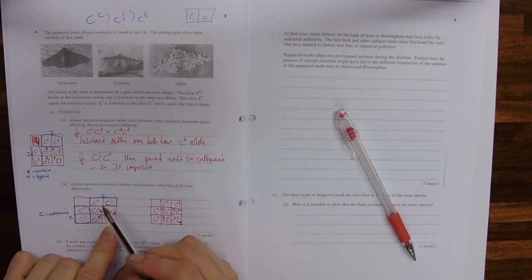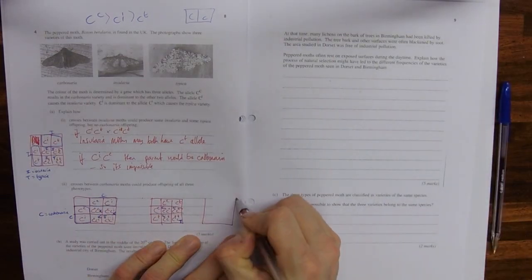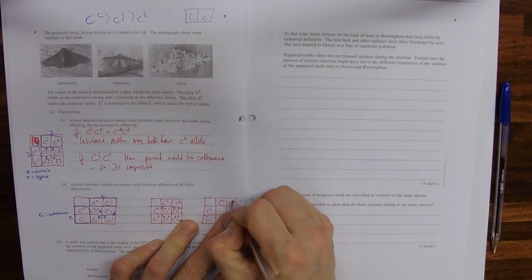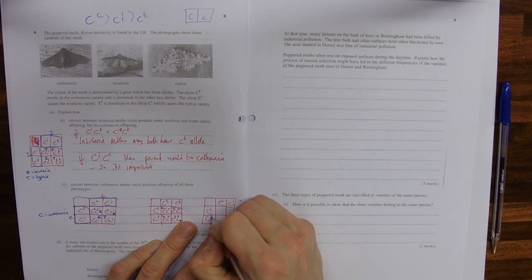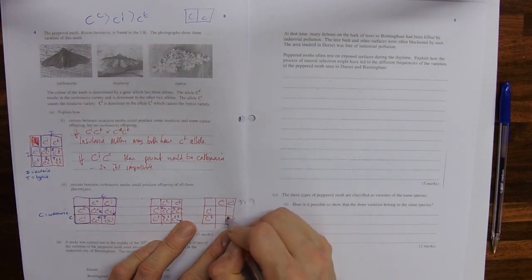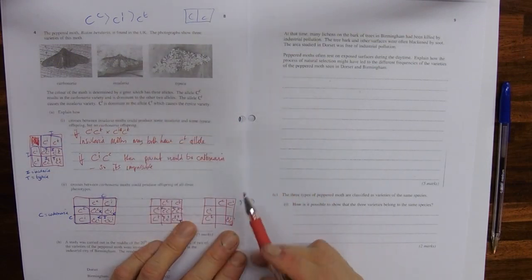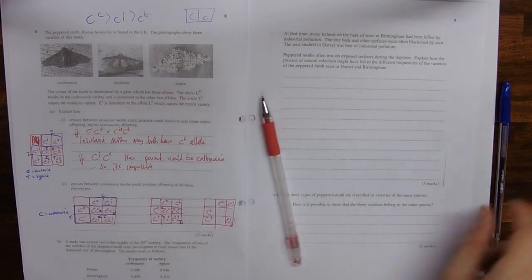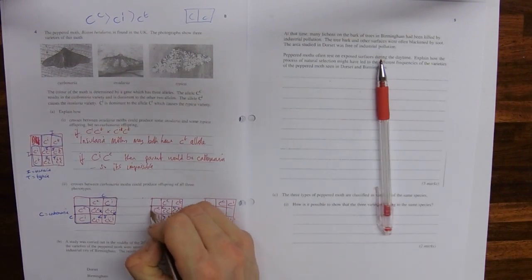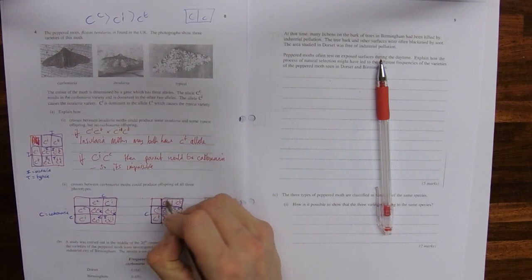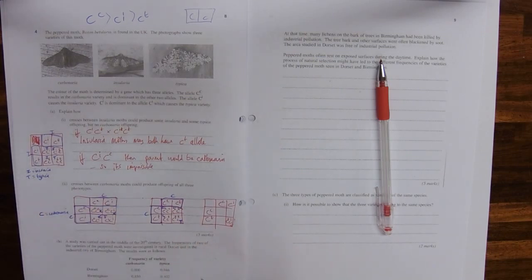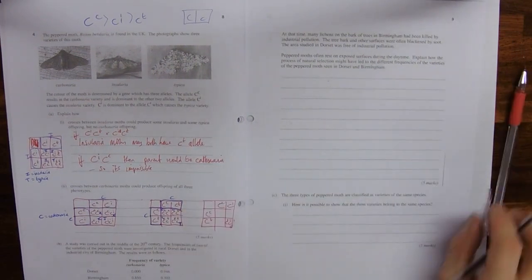And you could also do another one with the one remaining option, which would be with one of them being an I, one of them being a T. What you'd get here is TI, which would be insularia, and the others would be carbonaria. So you're just explaining that. The main thing is assigning the genotypes to the phenotype, so explaining these are carbonaria, and then using your symbols to make sure the information you're giving someone can recognize that you know what you're talking about. I'm not going to draw any more of them.